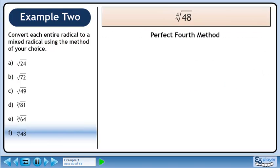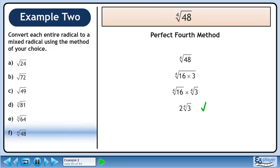Now we'll convert the fourth root of 48 to a mixed radical using the perfect fourth method. Write the fourth root of 48. Find two numbers that multiply to 48, one of which is a perfect fourth. We'll use 16 times 3. Split the radical. The fourth root of 16 is 2. The fourth root of 3 is an irrational number, so we'll leave this as a radical. The answer is 2 times the fourth root of 3.